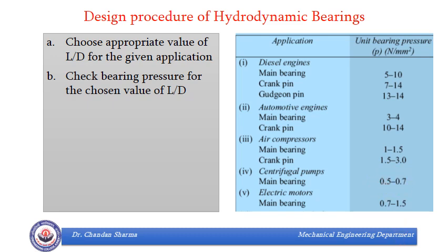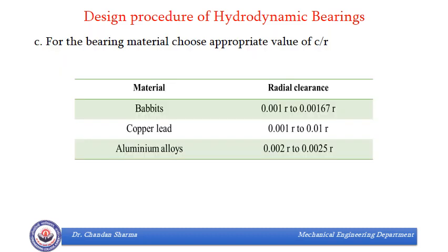By this point we have selected a value of L/D for which the bearing pressure is within limits from the table. If pressure is not within limits for L/D equal to 1, we change the value of L/D until the pressure comes in the permissible range. Next we need to assume the value of radial clearance C, or the ratio C/R. The general value of C is 0.001 times R if nothing is specified. We can also take help of the data book, which gives values for babbit materials, copper lead, and aluminum alloys.